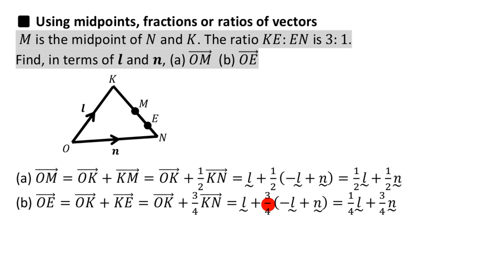L plus 3 quarters of minus L. So L minus 3 quarters L is 1 quarter L. And then you've got this 3 quarters N left over over there. And you've worked it out. O to E is equal to this stuff. And just to be clear, if I went the other way around, I would have got the same answer. 1 quarter L plus 3 quarters N.